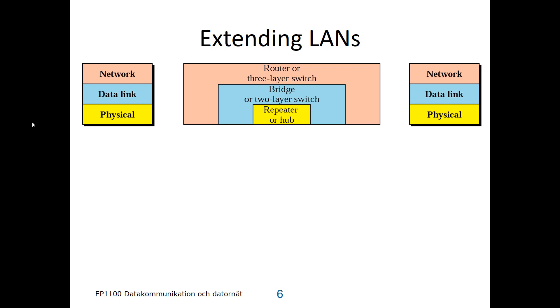You could extend LANs on three different levels: on the physical layer, on the data link layer, and on the network layer. If you do it on the physical layer, you talk about a repeater or a hub. It's pure signal regeneration or amplification, and the frames are not changed or affected in any way.